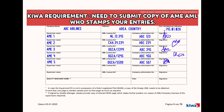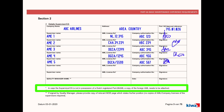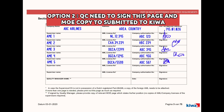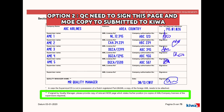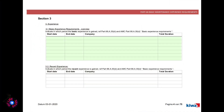Also note: in case the supervisor or engineer is not in possession of a Dutch-registered Part 66 AML, a copy of the foreign AML needs to be attached. There is another option — if you are not submitting the AME license copy, then you have to take a signature from the quality manager and provide the relevant MOE (Maintenance Organization Exposition) page which states the quality manager's position.